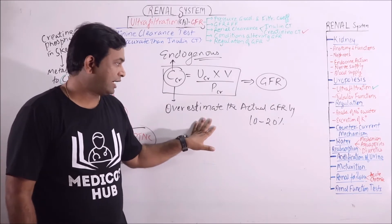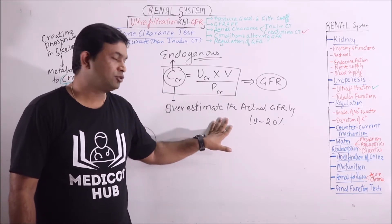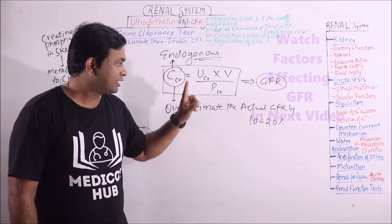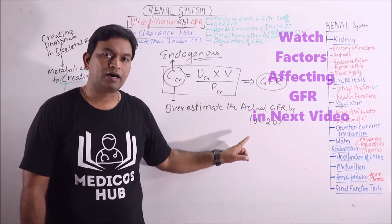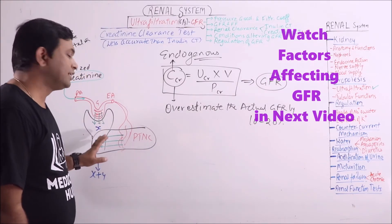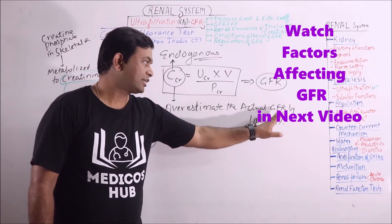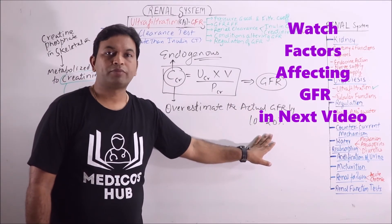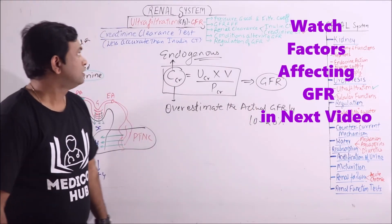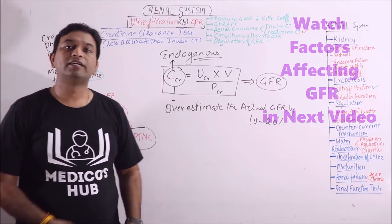But the factor which goes against this clearance test is that it doesn't give the actual GFR because some part of it is secreted in the tubules. So it overestimates the actual GFR by 10 to 20%.